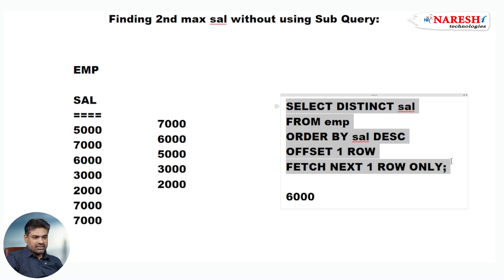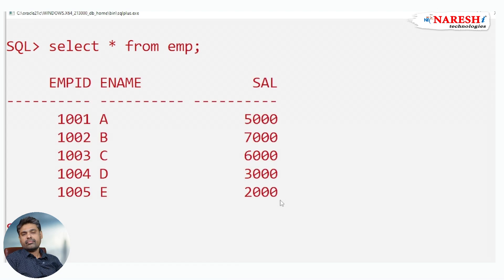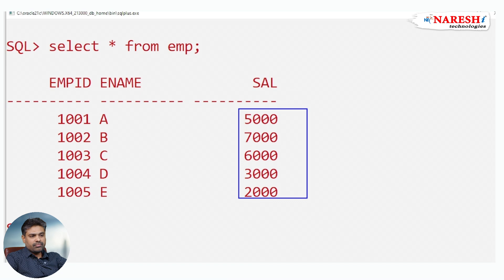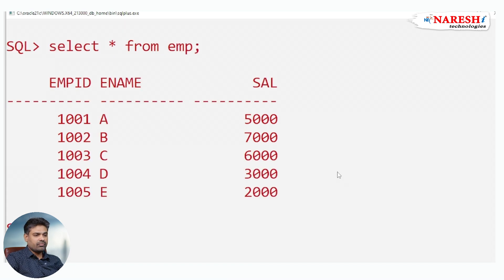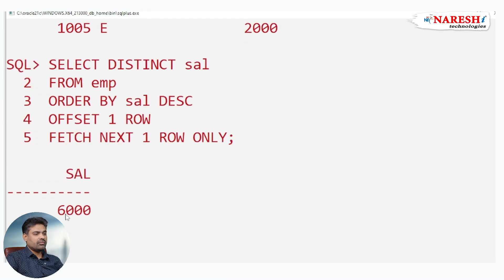Just copying this query. Observe here — the EMP table is there, just observe the table data with SELECT * FROM EMP. Now here salaries are there. I want to find second maximum salary, so just copying that query here. See, we are getting the second maximum salary 6000.